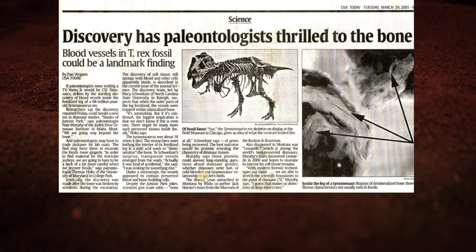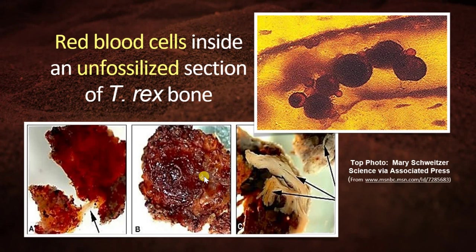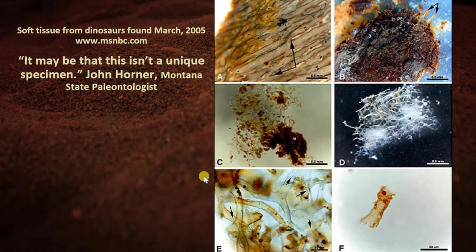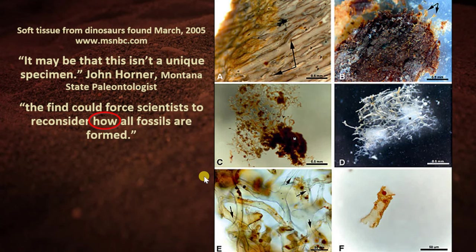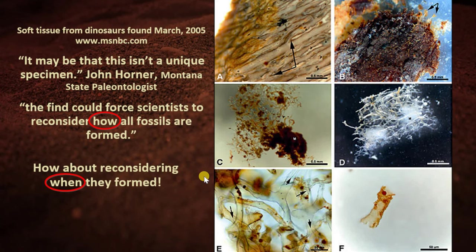Dinosaurs were taught to have lived in the Cretaceous era over 70 million years ago. But in a previous talk on dinosaurs in the Bible, we saw they were dragons that lived with man. Things are changing — in USA Today, March 29, 2005, 'Dinosaur has paleontologists thrilled to the bone: Blood vessels found in a T-Rex fossil.' Mary Schweitzer was the first person who found red blood cells in an unfossilized section of a T-Rex bone, along with soft tissue. A Montana State paleontologist said, 'The find could force scientists to reconsider how all fossils are formed.' But scientists don't want to reconsider the millions of years.